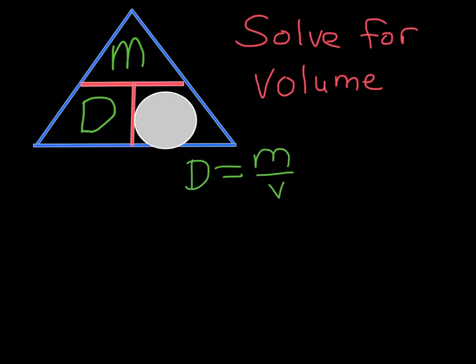We're going to try to get volume by itself. Now volume is on the bottom of the fraction, so we need to make this equation a little more linear in order for it to be a better representation of the math. We're going to multiply both sides by volume. So we are able to cancel these terms out and we're left with volume times density.